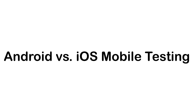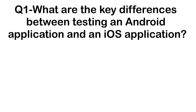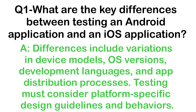Android versus iOS mobile testing: what are the key differences between testing an Android application and an iOS application? Differences include variations in device models, operating system versions, development languages, and app distribution processes. Testing must also consider platform-specific design guidelines and behaviors.